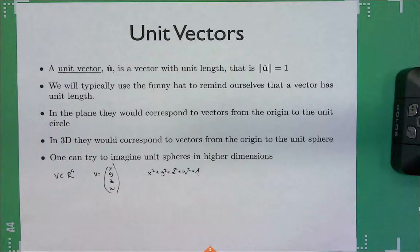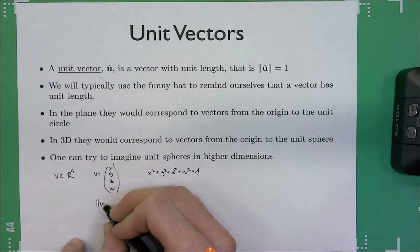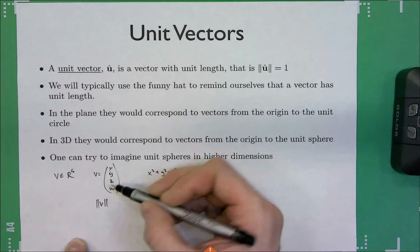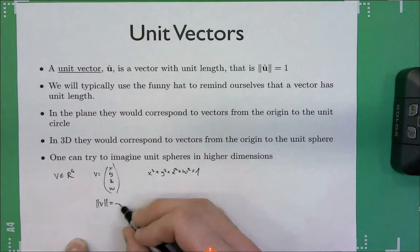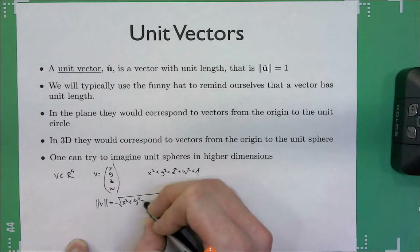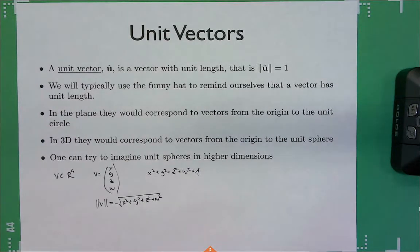The length of a 4D vector with coordinates x, y, z, w is just the square root of x² + y² + z² + w². It's always the same formula — just more dimensions. There are some properties of vectors in 3D which are not true in 4D, but the norm formula generalizes cleanly.